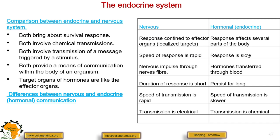For hormones, it takes time — the response is slow for hormones affecting growth or change. In the nervous system, the nerve impulse is transmitted through a nerve fiber, whereas hormones are transferred through the blood. The duration of response in the nervous system is short, but hormonal effects persist for a long time. Transmission in the nervous system is electrical since it is an impulse, but for hormones the transmission is chemical, as hormones are chemical substances.